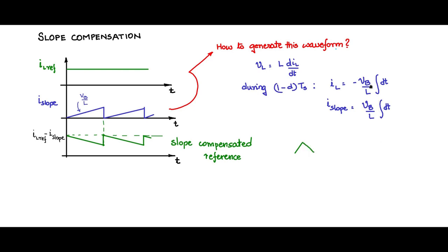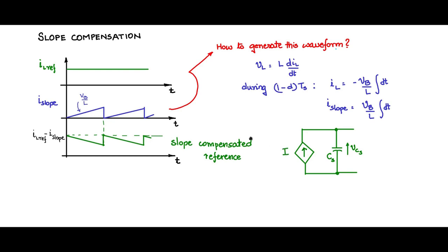To obtain this current wave shape by implementation, we can have a controlled current source connected to a capacitor Cs. We monitor the voltage vCs across the capacitor. For a constant current i from the current source, the voltage across the capacitance is (1/Cs) · integral(i · dt), which equals i/Cs · integral(dt) since i is constant.